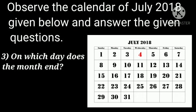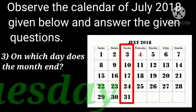Let us see the next one: on which day does the month end? The last day of the month is 31st July 2018. 31st July comes on Tuesday.